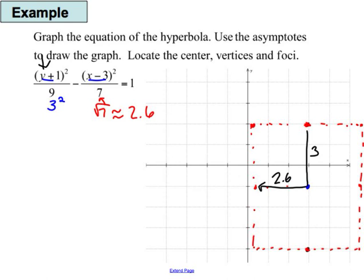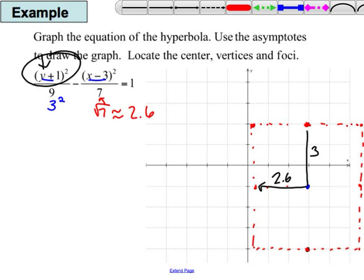Now I can draw in my asymptotes. It's going to be a vertical hyperbola. So that means my asymptotes will help me figure out where the boundaries are. So let's take a look at this one. It's going to have an asymptote here, and it's going to have an asymptote here.